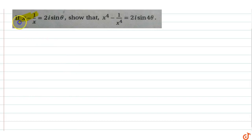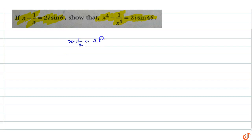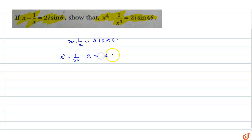In this question, if x minus 1 by x equals to 2i·sinθ, then x⁴ minus 1 by x⁴ equals to 2i·sin4θ. Taking squares on both sides: x² + 1/x² - 2 equals to (2i·sinθ)², which is 4·i²·sin²θ, and since i² = -1, this gives -4sin²θ.